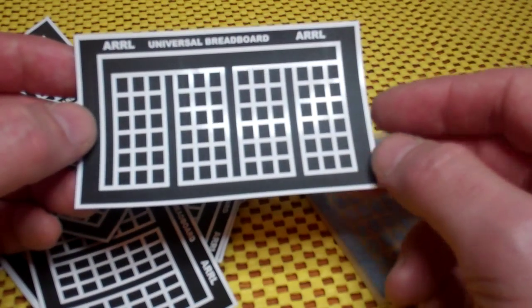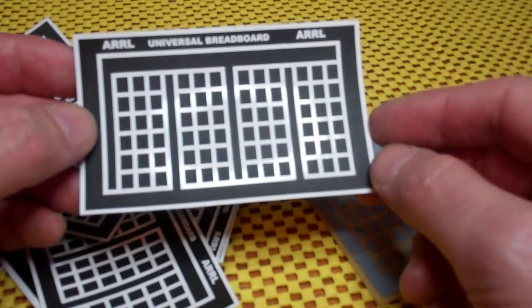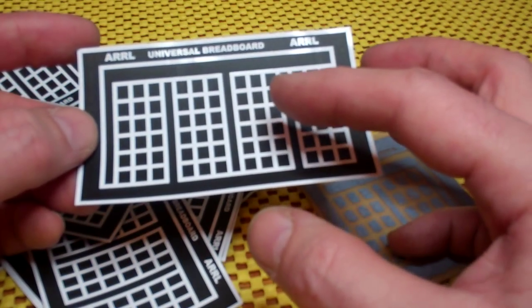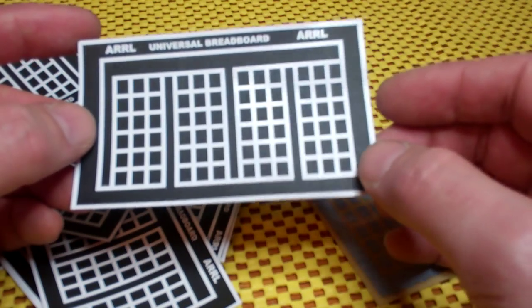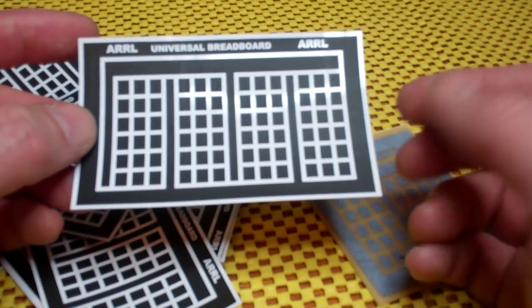I've printed it straight on, and laserjets obviously work different to inkjets. Inkjets will spray ink onto the paper and it will dry on the surface, whereas laserjets will actually melt the plastic onto the surface.